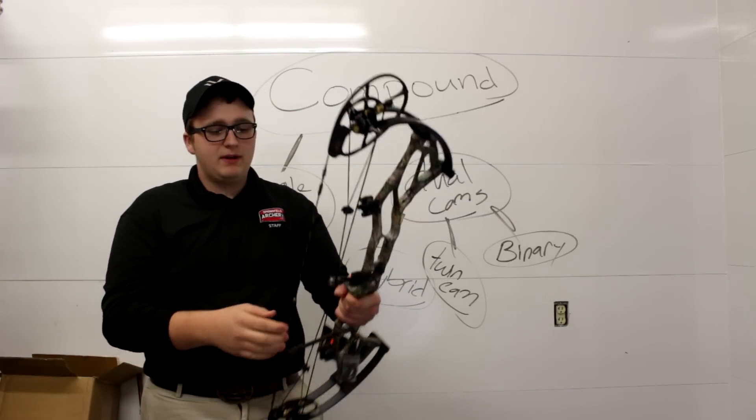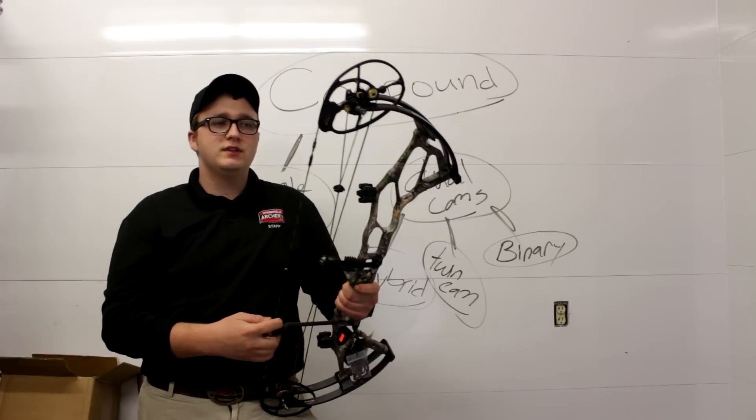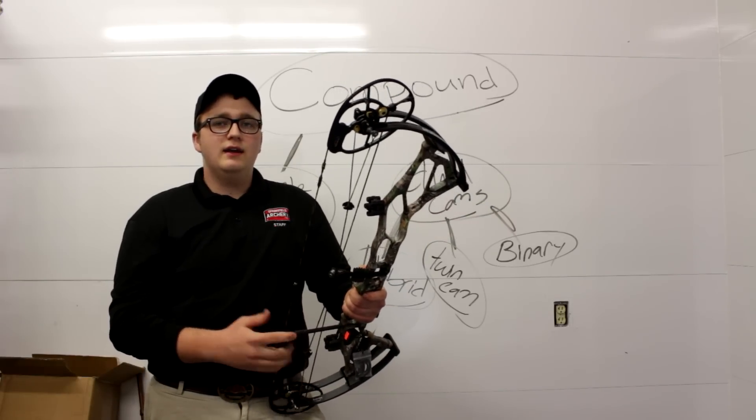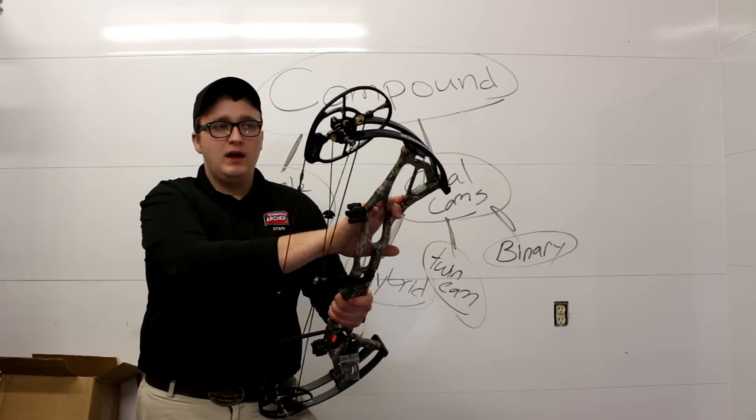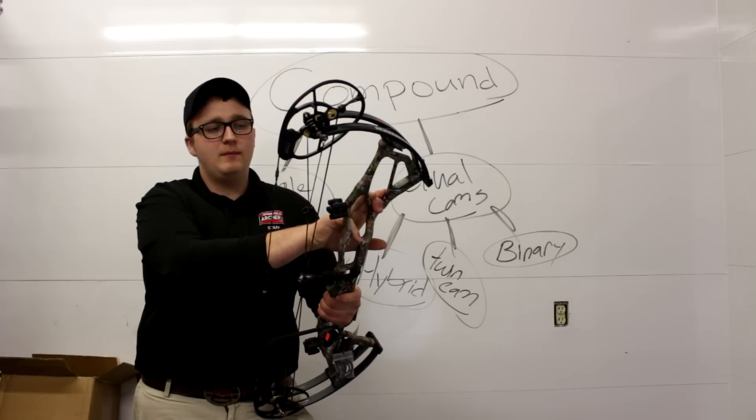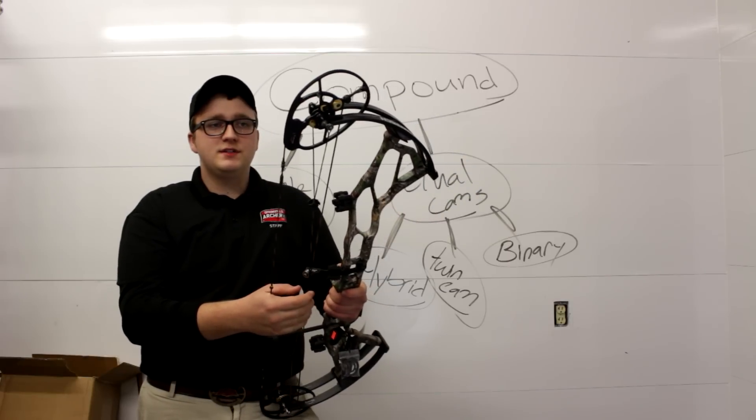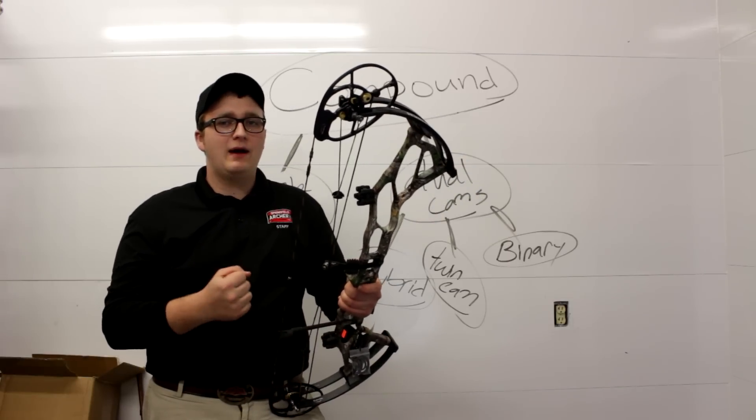These bows, this type of cam is very common in youth bows. Diamond uses it a lot in their Atomic, the Infinite Edge Pro, and Bowtech uses it a lot as well on their higher end bows, some of them. But great cam system, known to have a solid back wall, even though it's only using cable stops.